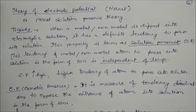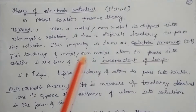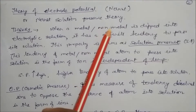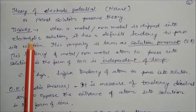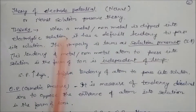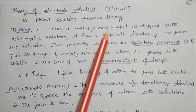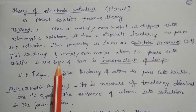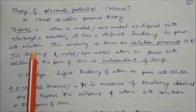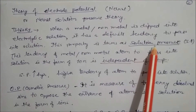Now we will see the theory of electrode potential. This theory was given by Nernst and is called the Nernst solution pressure theory. According to this theory, when a metal or non-metal — for example, graphite as a non-metal — is dipped into an electrolytic solution, it has a definite tendency to pass into the solution. This property is termed solution pressure.